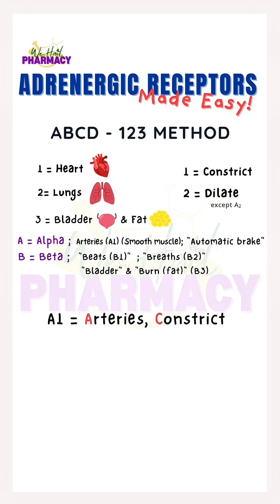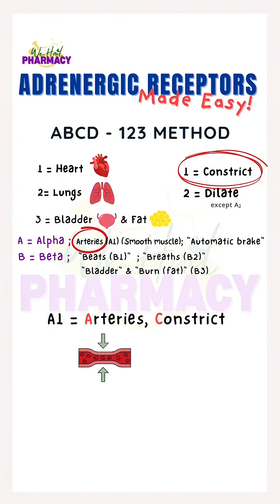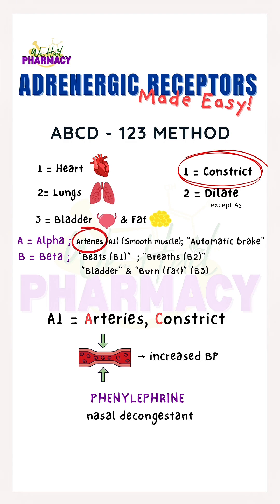For A1, we think arteries constrict. When alpha-1 is activated, the blood vessels constrict, which leads to increased blood pressure. A drug example is phenylephrine, a decongestant which constricts blood vessels in the nasal passages to relieve nasal congestion. Because alpha-1 can increase blood pressure, it is also used in hypotension.